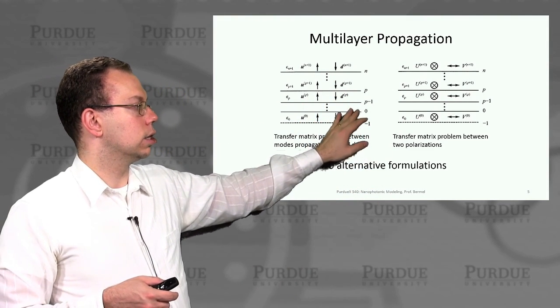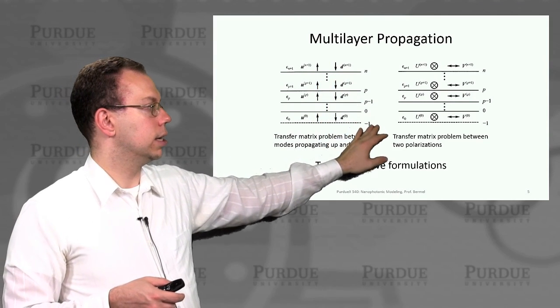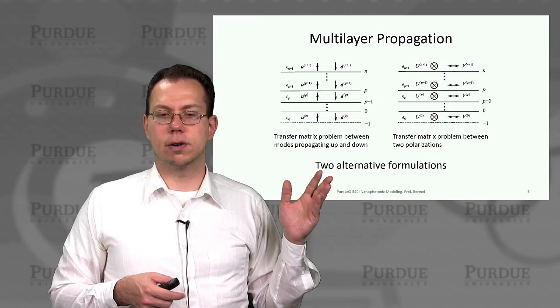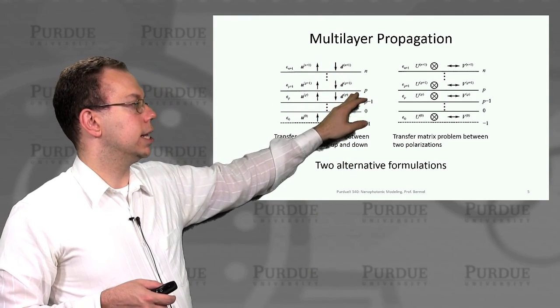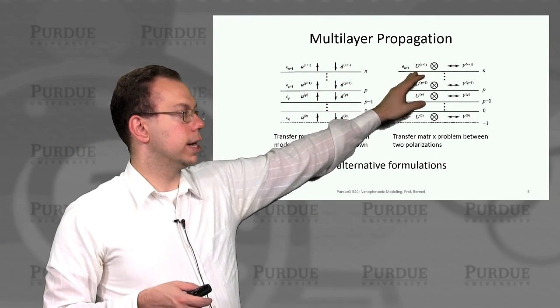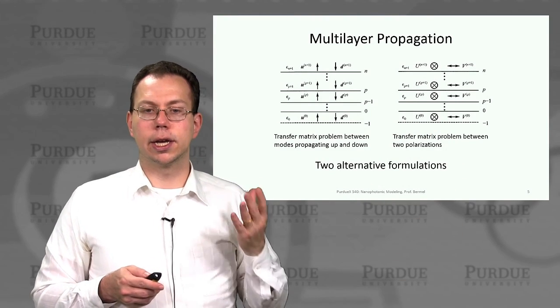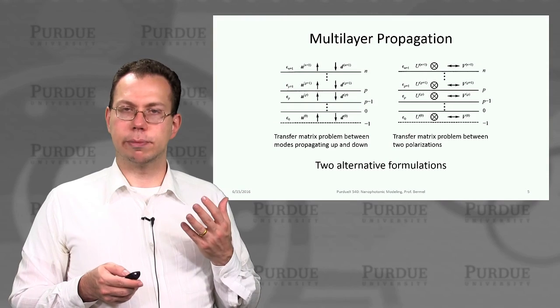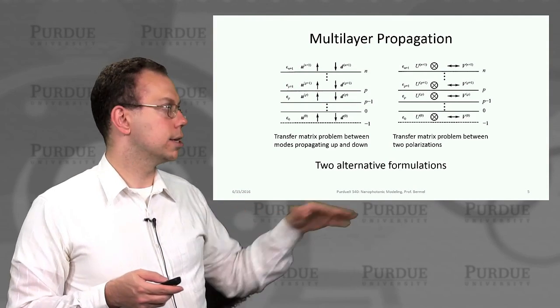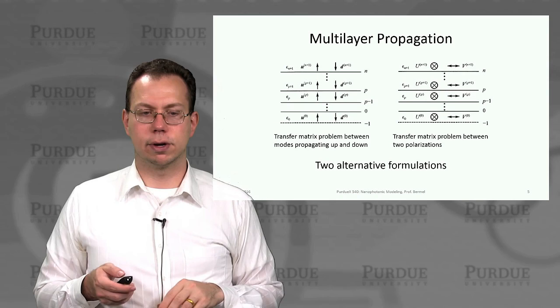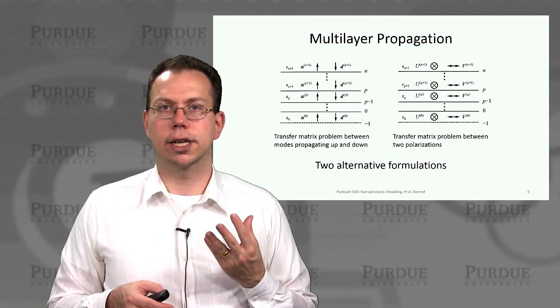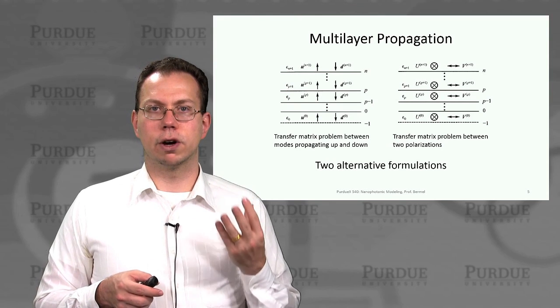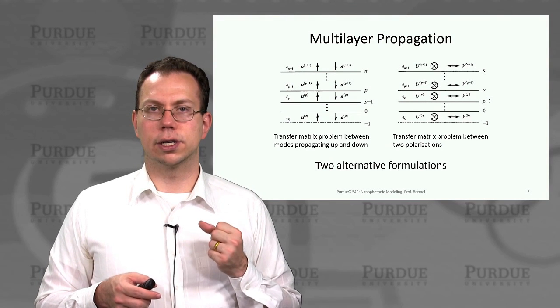And so then this is showing what all these layers, composited together, are going to look like. This is just basically two different compositions of what's almost identical problem. One in which you have up and down propagating waves, and then the other where you have two different polarizations. And so those can both be valid treatments. So it's not that one is better than the other, but we're mainly going to stick to the left-hand side one. So now in the next lecture, we'll talk about how to actually formulate the multi-layer solution in more detail.